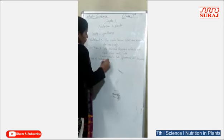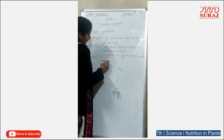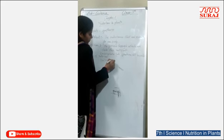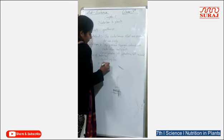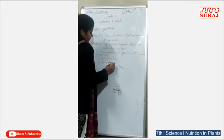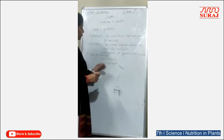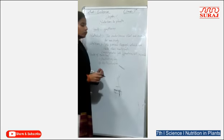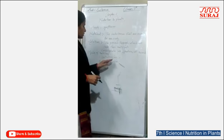Modes of Nutrition are Autotrophic mode and Heterotrophic mode. Auto means self, trophic means to prepare or to synthesize.